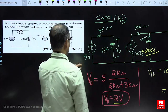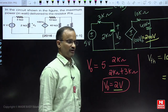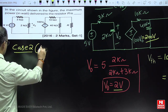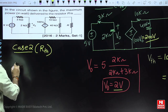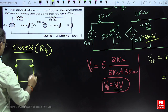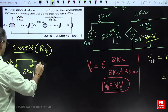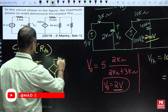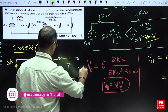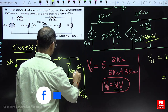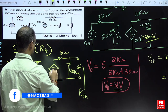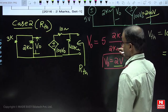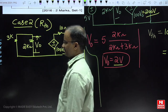One more requirement is the equivalent resistance Rth. To find the equivalent resistance, the procedure is to deactivate all the independent sources — that means the voltage source is replaced by a short circuit. While finding Rth, deactivate all independent sources, but the dependent source should remain the same as in the original circuit.